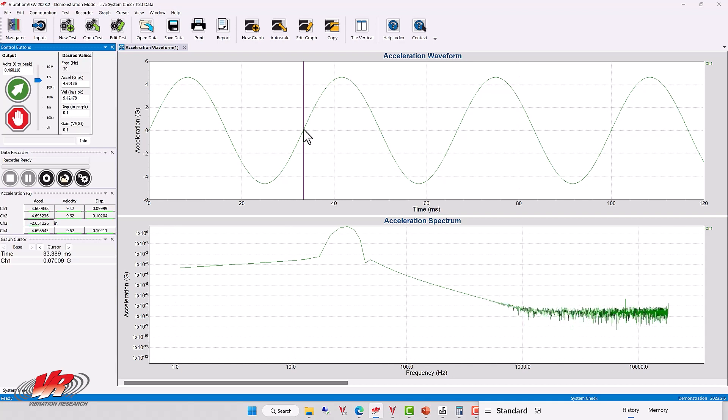That's the time for one cycle. That's the period. The period is the time for one cycle: 33.389 milliseconds.